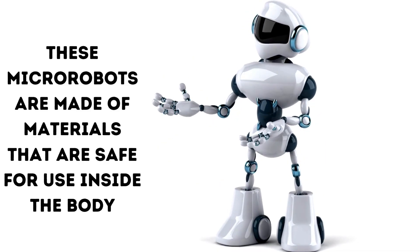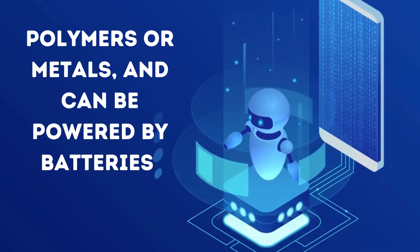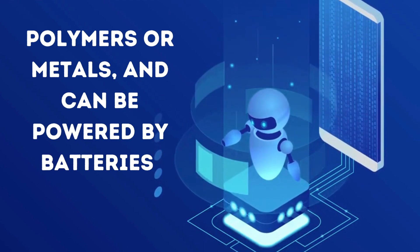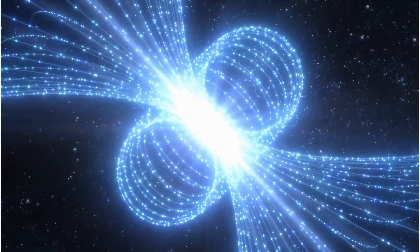These micro robots are made of materials that are safe for use inside the body, like various polymers or metals, and can be powered by batteries or other sources of energy like magnetic fields or ultrasound waves.